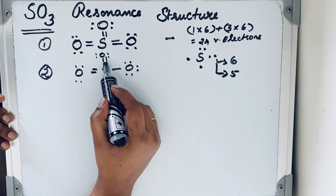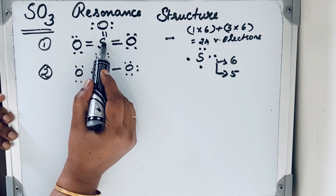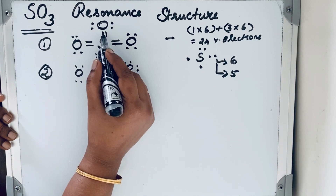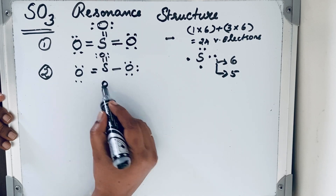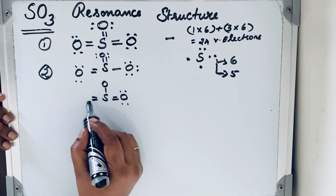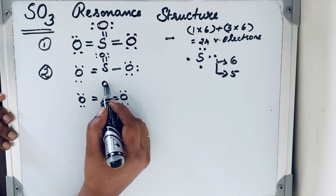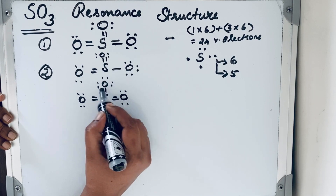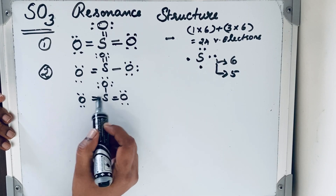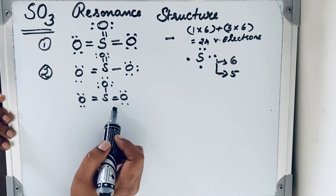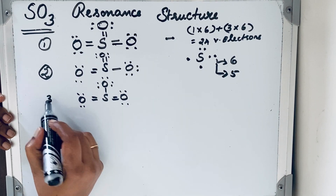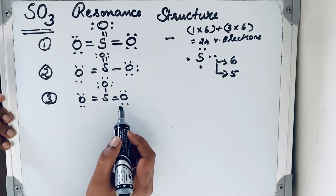Similarly, we can convert a different double bond into a single bond to get the third resonating structure. Completing the octets on each oxygen and checking: 2, 4, 6, 8, 10, 12, 14, 16, 18, 20, 22, 24 — 24 valence electrons are present. This is the third resonating structure.